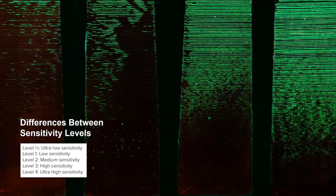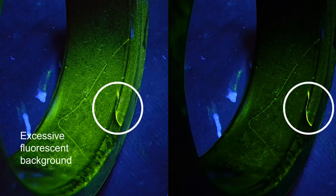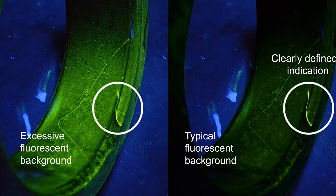AMS 2644 is the inspection penetrant specification that establishes test procedures for qualification and approval of penetrant materials. Approved materials are listed on the Qualified Products List, commonly known as the QPL AMS 2644. A good first step in penetrant selection is reviewing governing specifications for required sensitivity levels. High sensitivity penetrants work well on smooth machined surfaces; however, on rough cast parts they can leave excessive fluorescent background, making inspection difficult. Lower sensitivity penetrants are usually a better choice for rough surfaces.